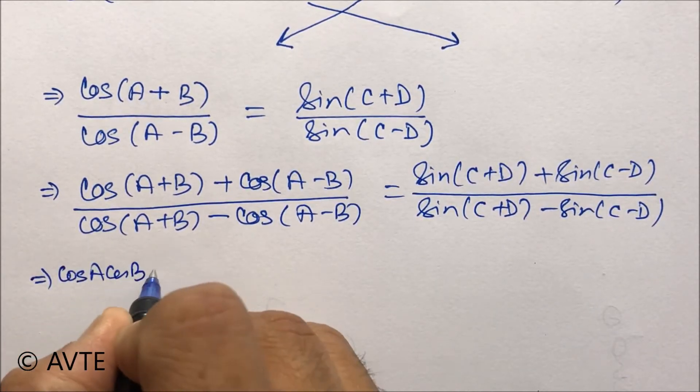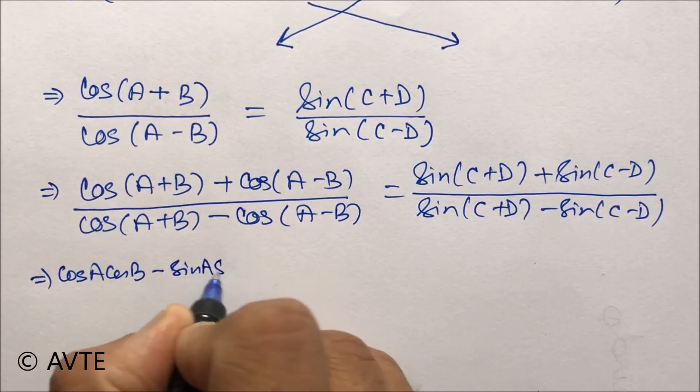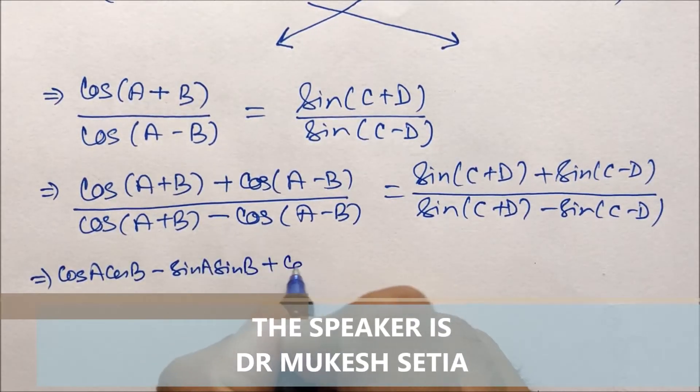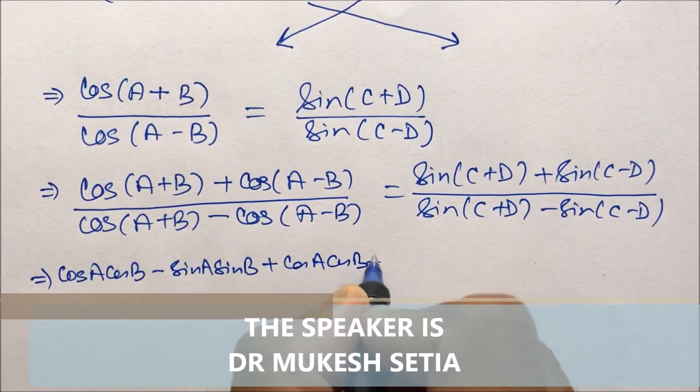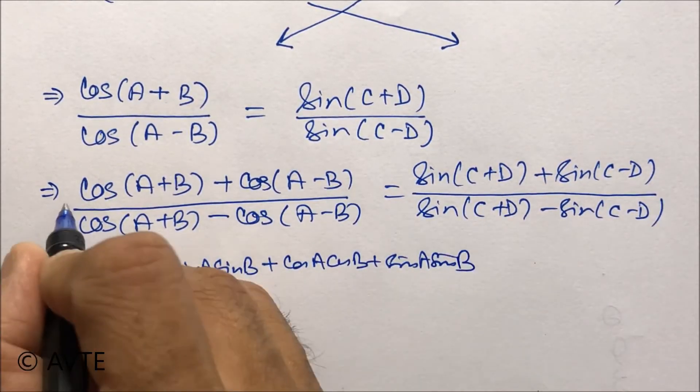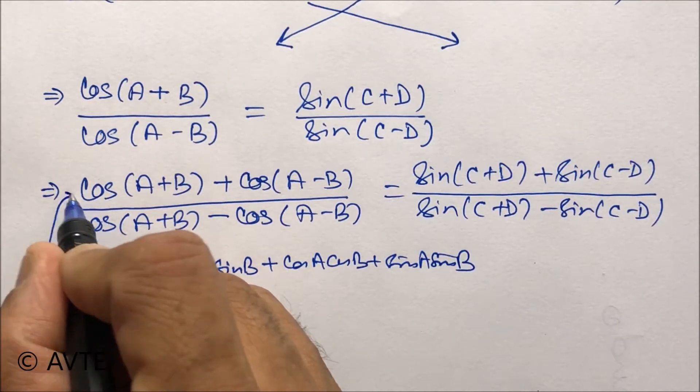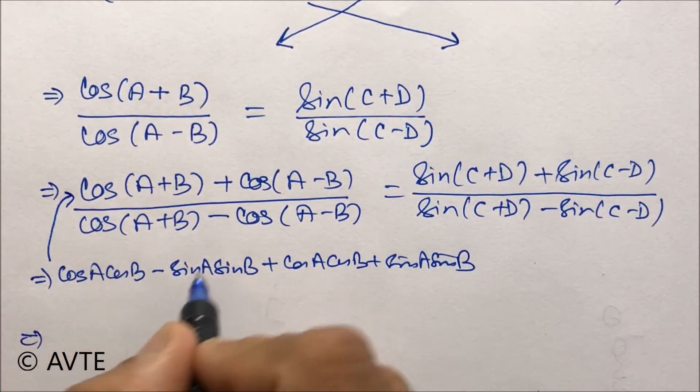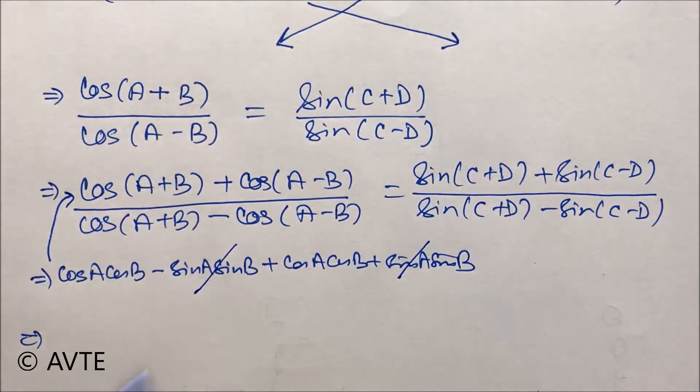cos A cos B minus sin A sin B plus cos A cos B plus sin A sin B throughout. So I'm now using only the numerator. After, you can see we can cancel this with this.